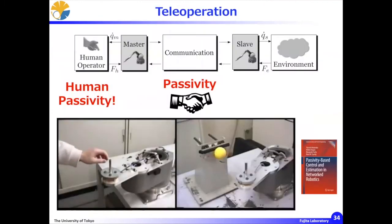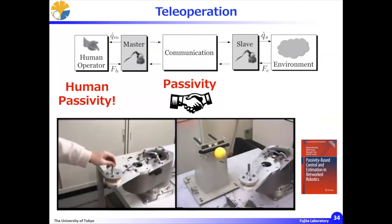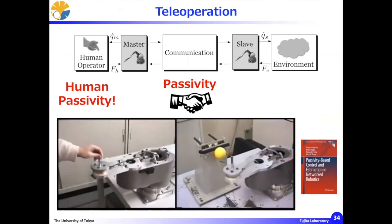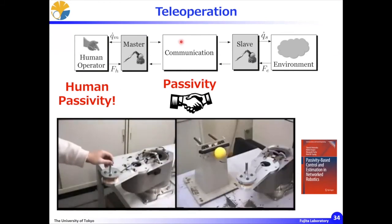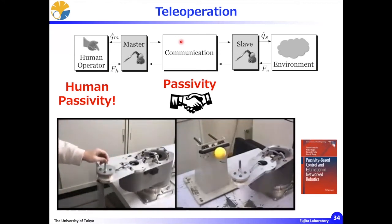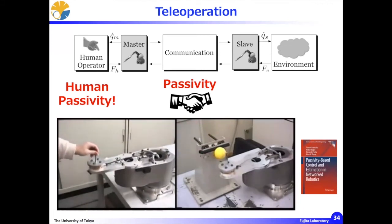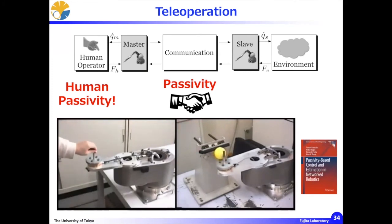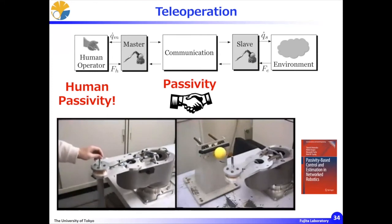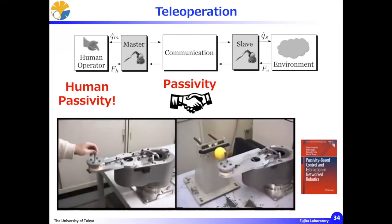Now let us move on to the last part of my talk: human. Human-controlled teleoperation systems are very well known. Each robot is controlled by the passivity-based approach. The network communication block normally contains possible time delay, but by using the well-known scattering transformation technique, we can preserve passivity. Finally, if the human part and the environment part are passive, then the overall feedback connection remains passive. This argument is deeply exploited in our book.